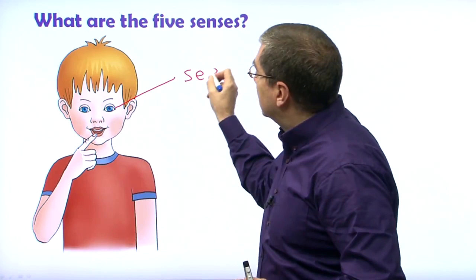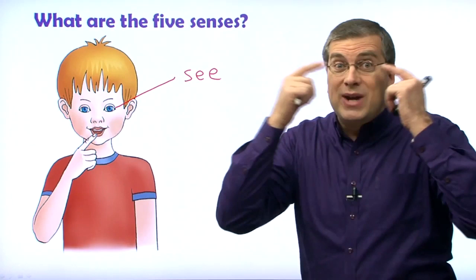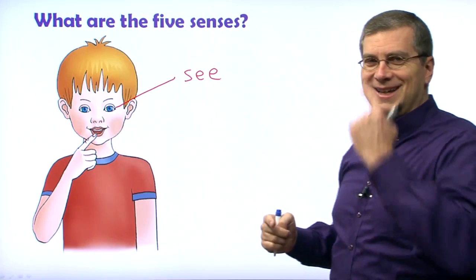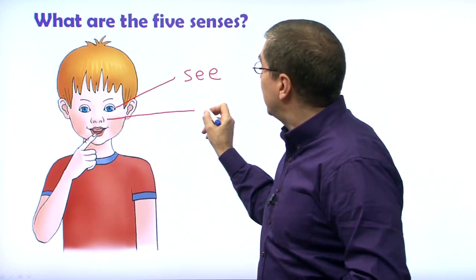What about between the eyes? We've got a nose, right? Mine is a big one. So the nose — what do we do with the nose? We smell. So: eyes — see; nose — smell.